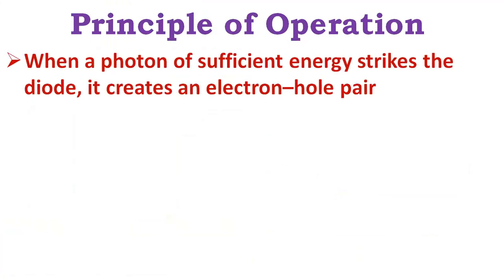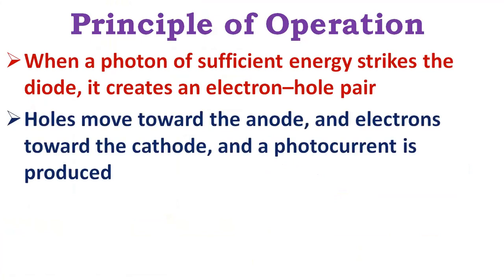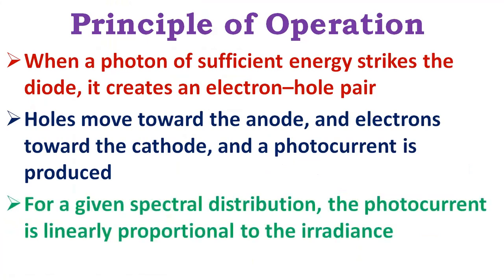The principle of operation: a photodiode is a PIN structure or p-n junction. When a photon of sufficient energy strikes the diode, it creates an electron-hole pair. This mechanism is also known as the inner photoelectric effect. If the absorption occurs in the junction's depletion region or one diffusion length away from it, these carriers are swept from the junction by the built-in electric field of the depletion region. Thus holes move towards the anode and electrons towards the cathode, and a photocurrent is produced.